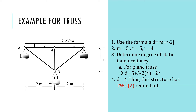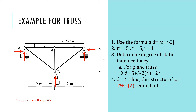We will use m plus r minus 2j to determine the d for the truss. This truss has five members, five support reactions, and four joints. Putting this into the equation, we obtain d equal to 2 degrees. This indicates that this structure has two redundants.